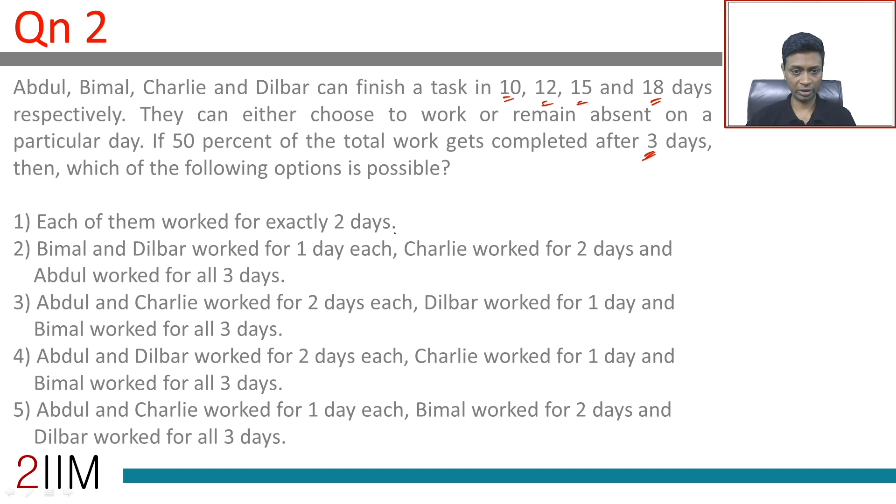Each of them work for exactly 2 days, for 1 day each, 2 days are different combinations. So think about this - Abdul can do 1 tenth of the task in a day, Bimal 1 by 12, Charlie 1 by 15 and Dilbar 1 by 18.